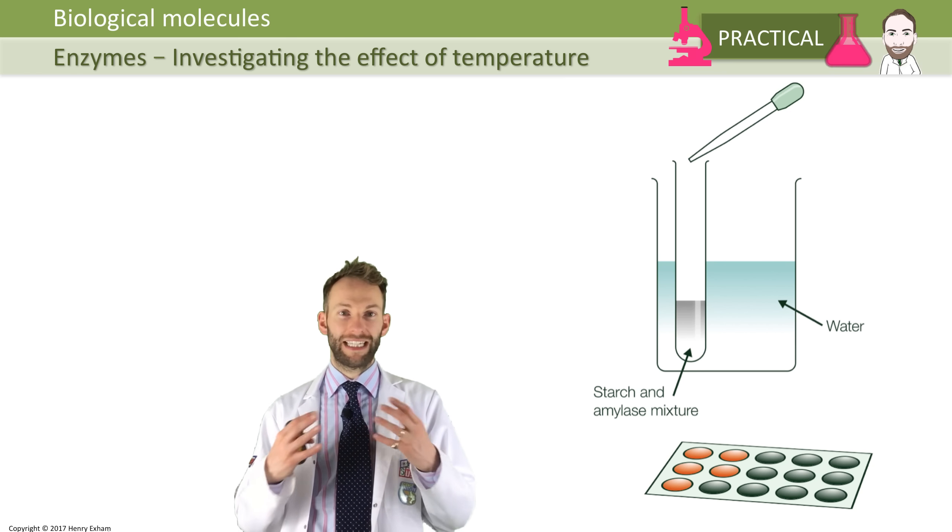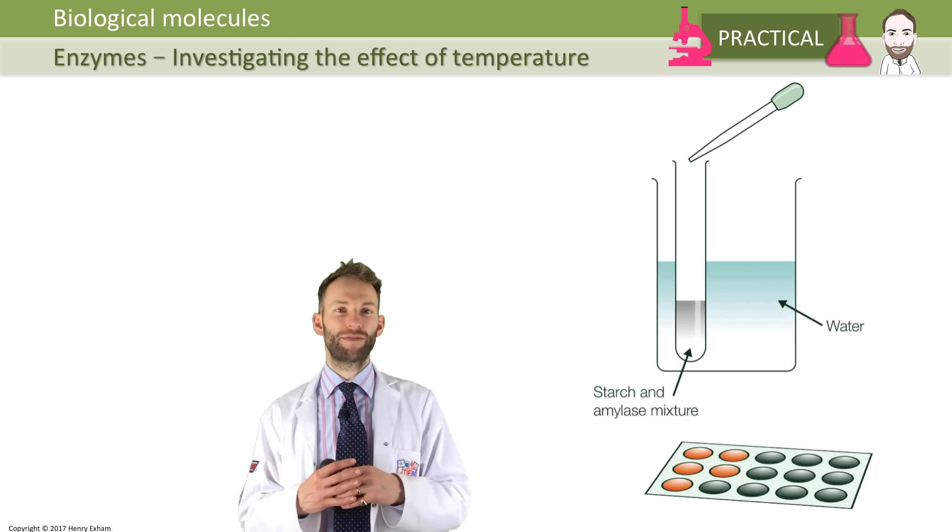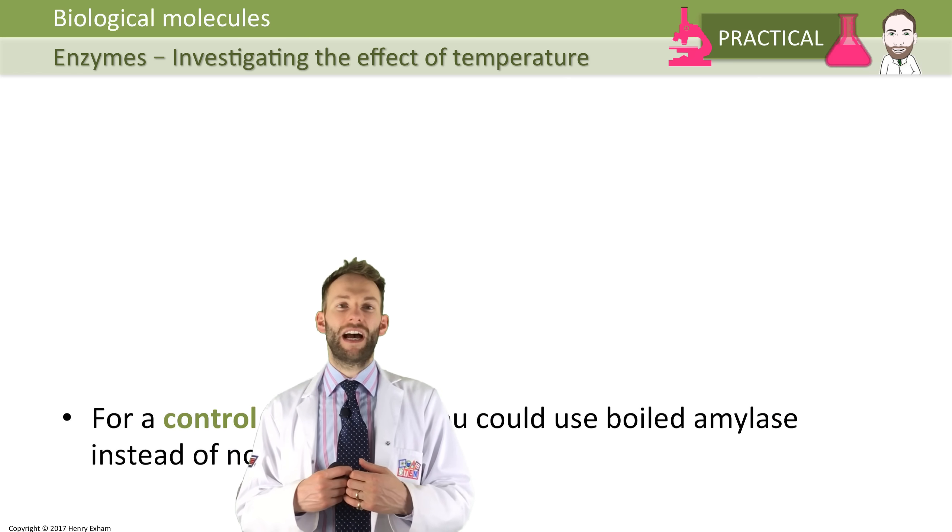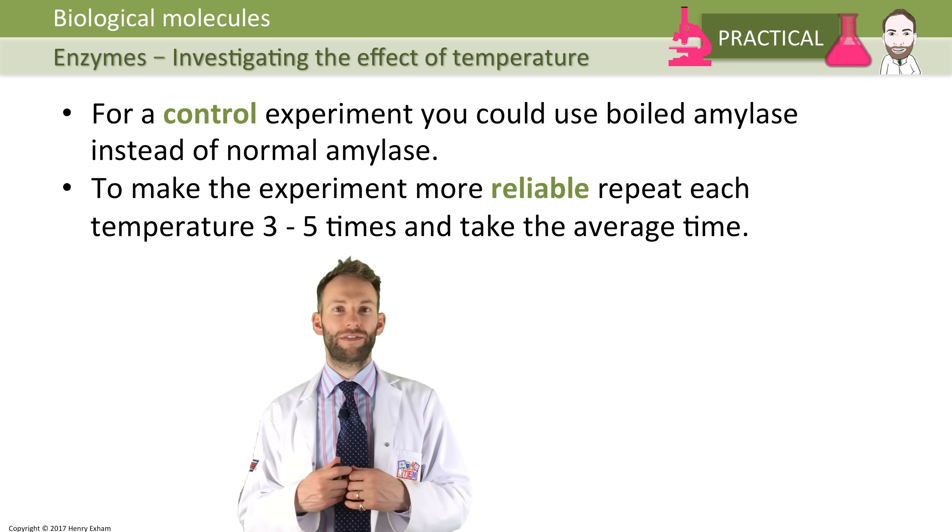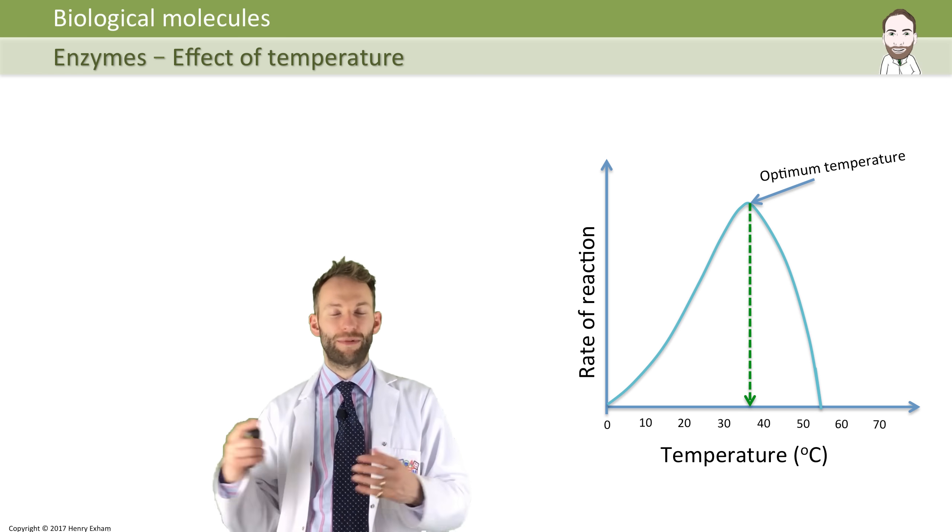Do a range of maybe seven or eight temperatures - maybe 10, 20, 30, 40, 50, 60, 70, 80 degrees - and then collect your results and plot them on a graph. When you do that, you will find that you should get this sort of shape, and this is the typical shape of what happens with an enzyme as you change the temperature.